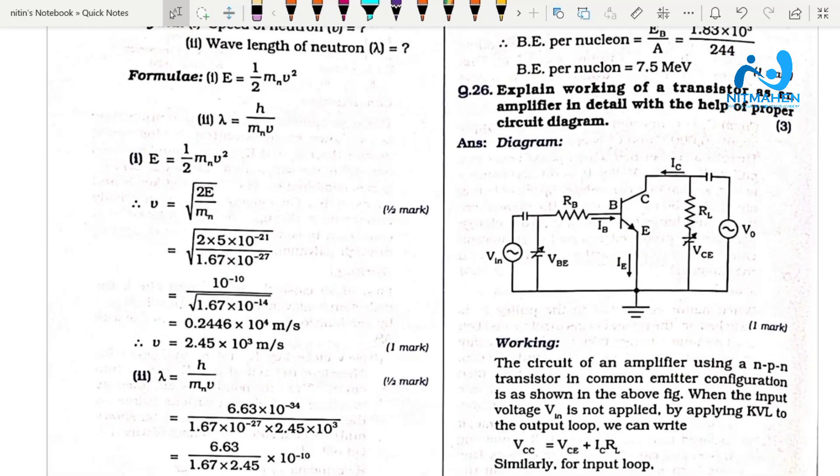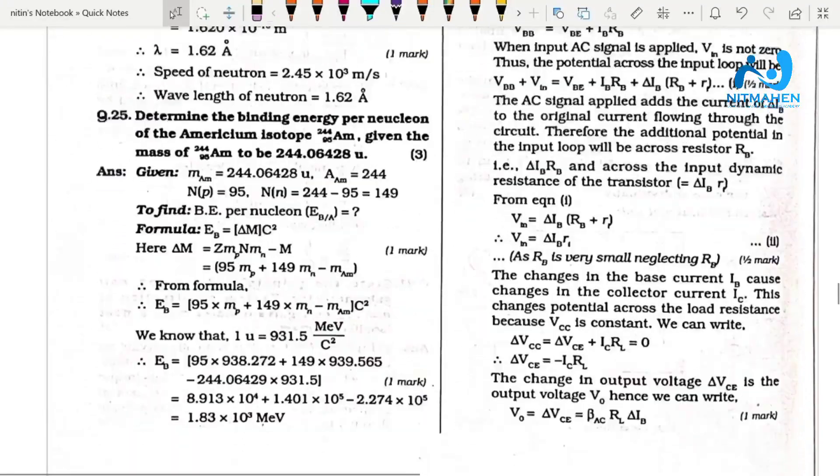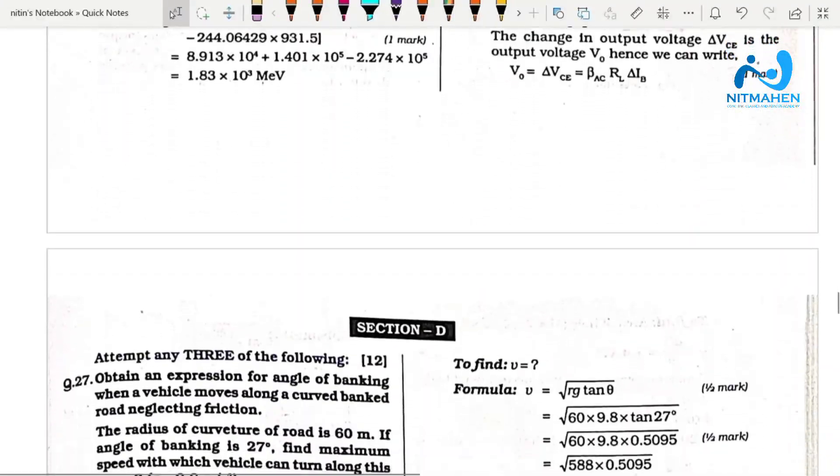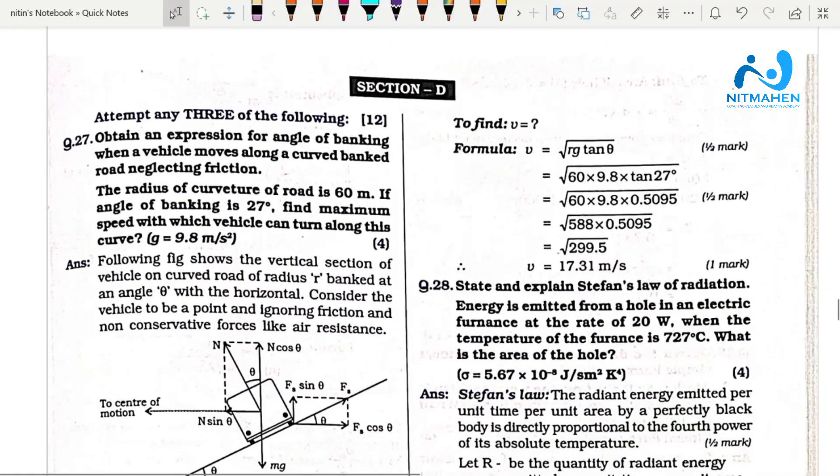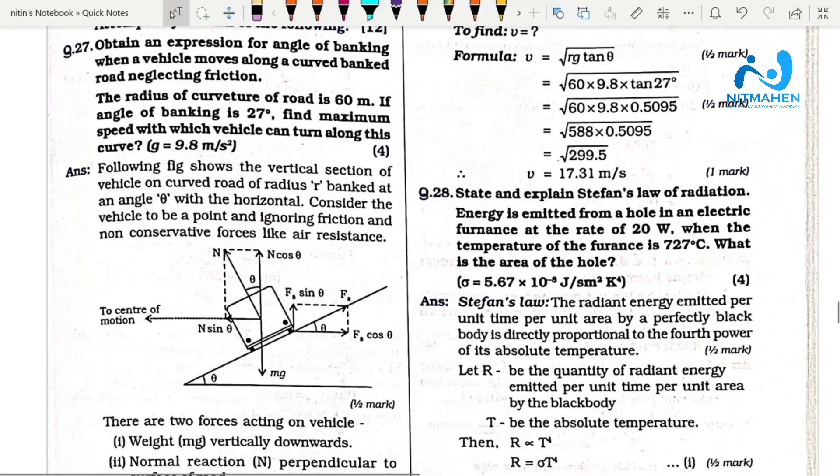The question paper asks about transistor in detail with the help of proper circuit - explain correct working by using the transistor diagram. Then derive the expression for the angle of banking the road.